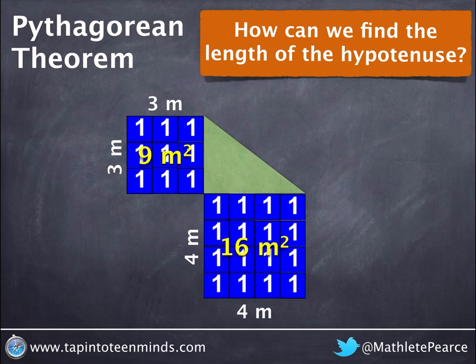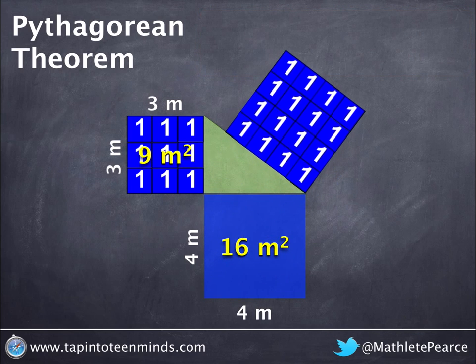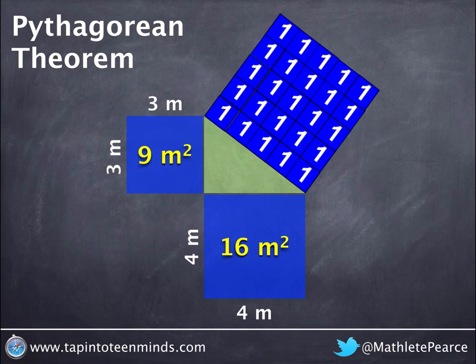When we study the relationship that's formed by moving our 16 meters squared to the hypotenuse as well as our 9 meters squared, we'll notice that we have another larger square of 5 by 5, or 25 meters squared.